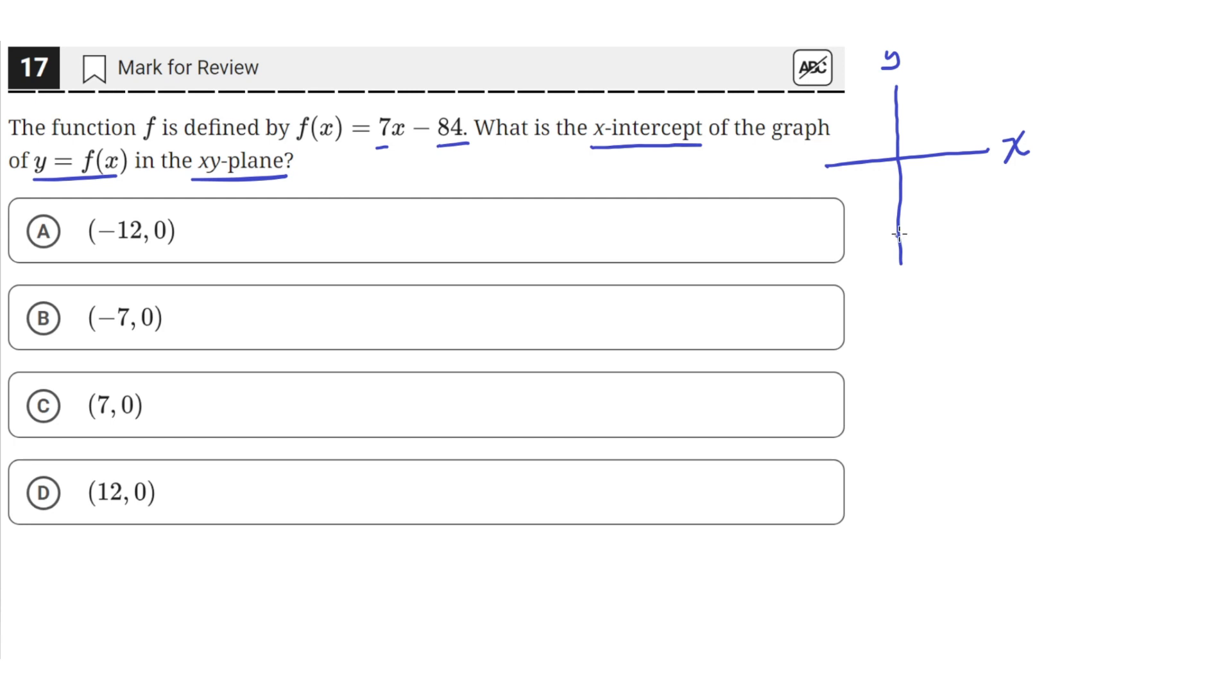So the line begins way down here at a y-value of negative 84, and it's a linear increasing line. So the slope is positive.